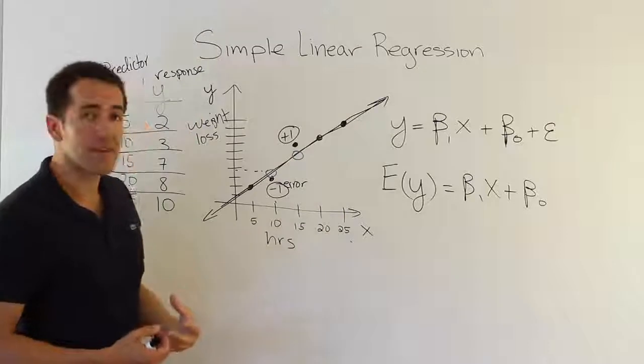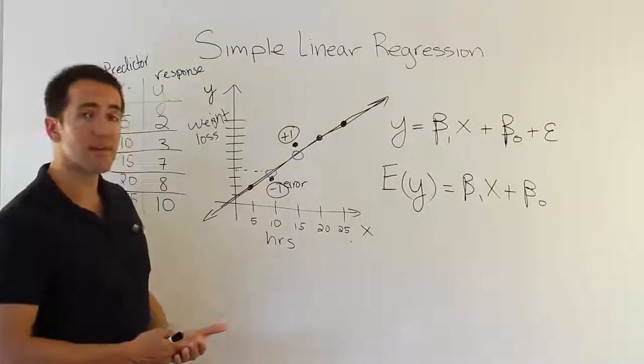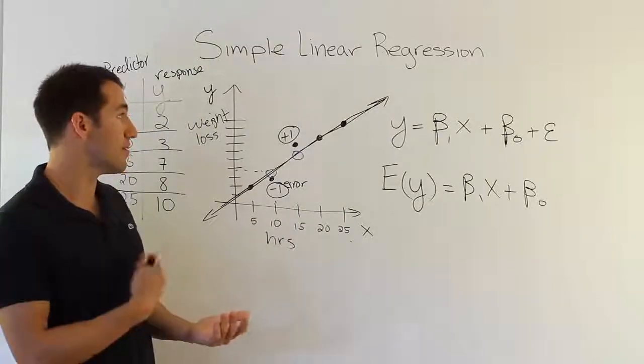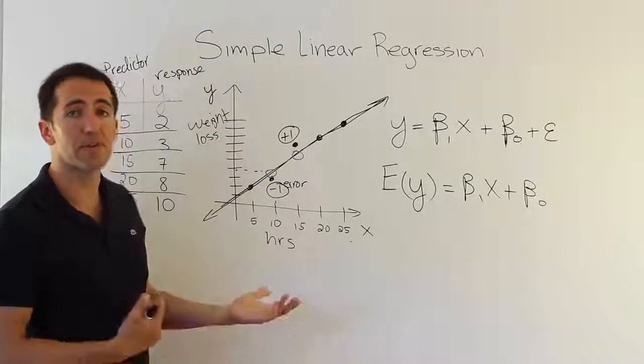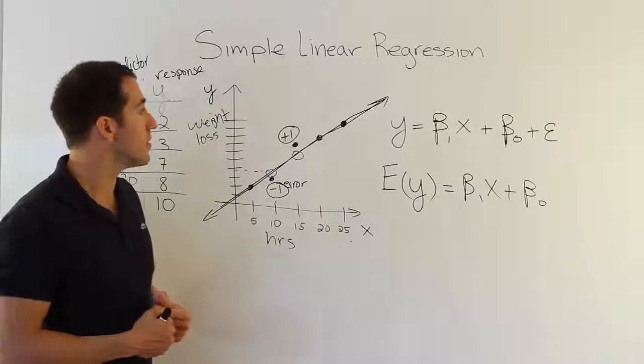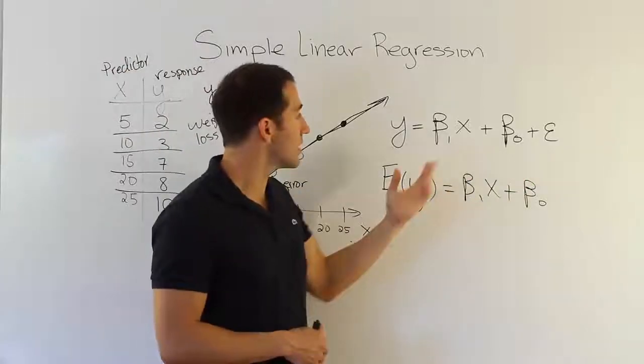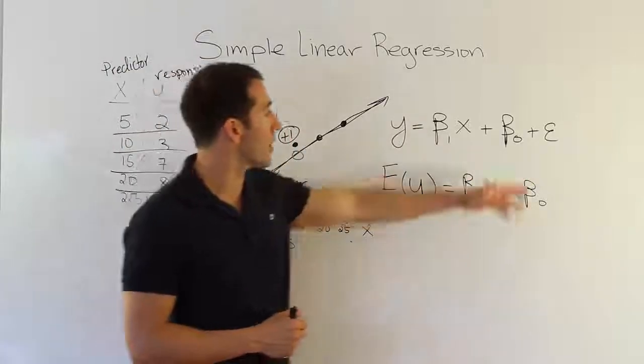And because that stuff exists, it means that we might have two x's that have the exact same x value, but have, of course, a different y output. So, two people may spend the same amount of time and then get different weight loss results. So, as a result, the model's not going to be perfect because of this random error term.